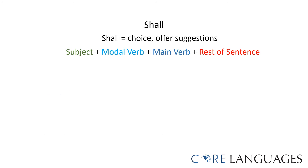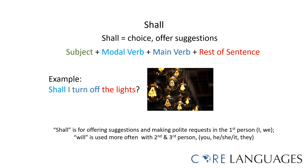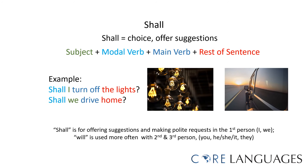The modal verb 'shall' is used to express a choice, or to offer suggestions. It is typically only used with the first person, I and we. The auxiliary verb 'will' is more frequently used with the second and third person: you, he, she, it, and they. For example, shall I turn off the lights? Or, shall we drive home? Both sentences are questions, so they use inverted word order.